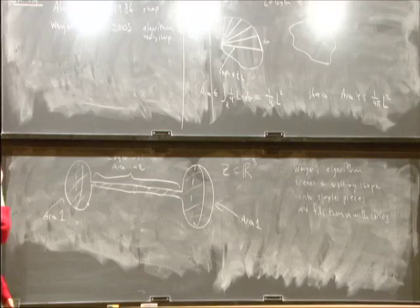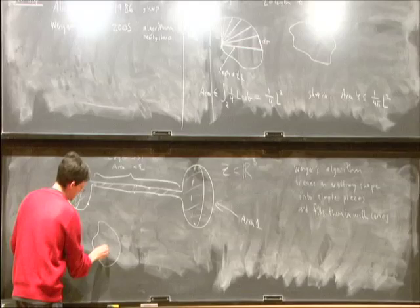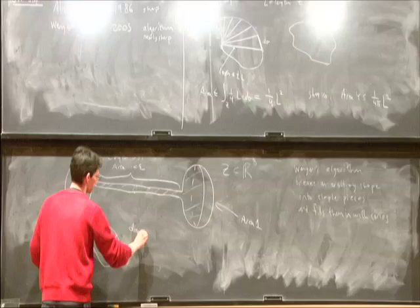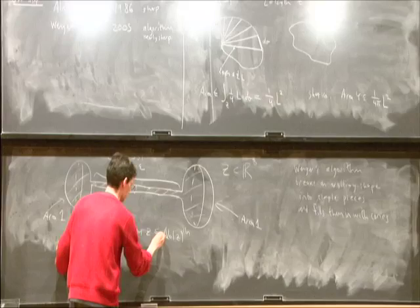So in order for it to be a good idea to fill in a piece with a cone, what you need to know is that the lengths of these segments, which are basically the diameter of the piece, cannot be too much bigger than the volume of the piece to the 1 over n. And then you can have a fudge factor. You have something like this. So this is a simple piece.